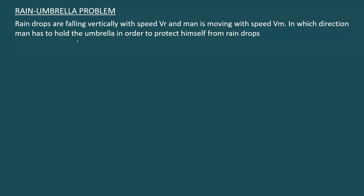The next application is the rain umbrella problem. The raindrops are falling vertically with speed vr, and the man is moving with speed vm. The question is: in what direction does the man have to hold the umbrella in order to protect himself from the raindrops? The raindrops are falling vertically — this is the simplistic case; they can fall at an angle too — but let us understand the basic concept.